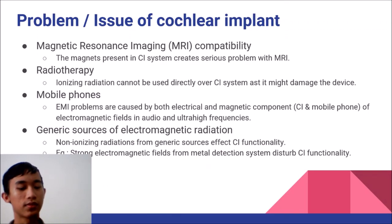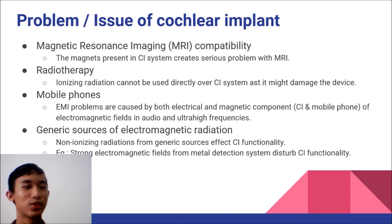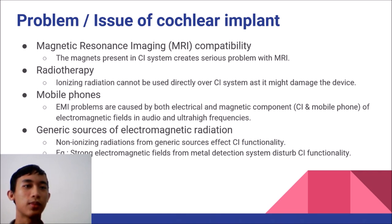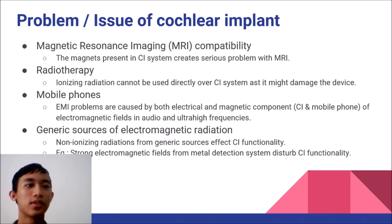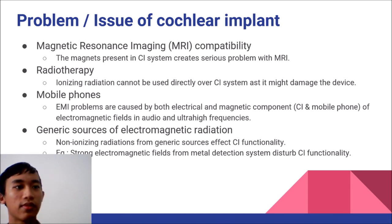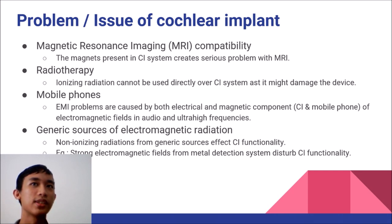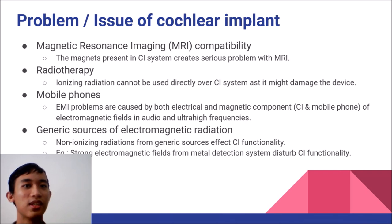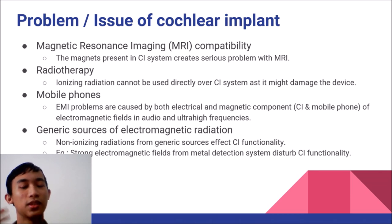What are the problems of cochlear implants in regards to compatibility with electromagnetic sources? First, MRIs always create problems — the magnets are too powerful and too strong, creating a problem for people who already have small inner magnets within the head. Next, radiotherapy: ionizing radiation is not ideal, as it is not great if the magnet absorbs a lot of ionization.